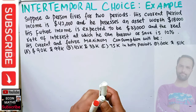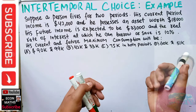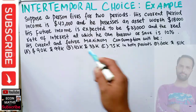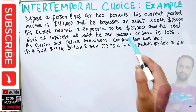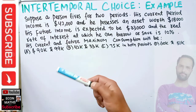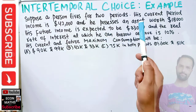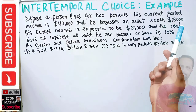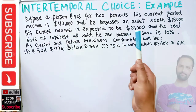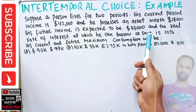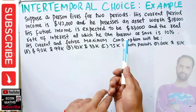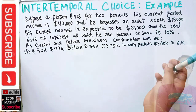In this video we will solve a problem on intertemporal choice. This question was asked by a brother on YouTube. Suppose a person lives for two periods. His current period income is 42,000 dollars, he possesses an asset worth 18,000 dollars, his future income is expected to be 33,000 dollars, and the real rate of interest at which he can borrow or save is 10%.